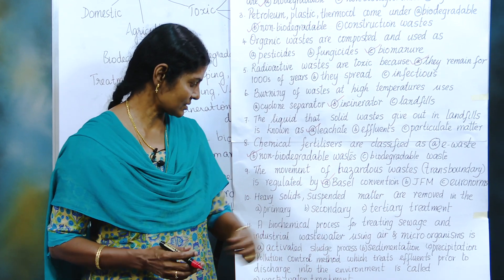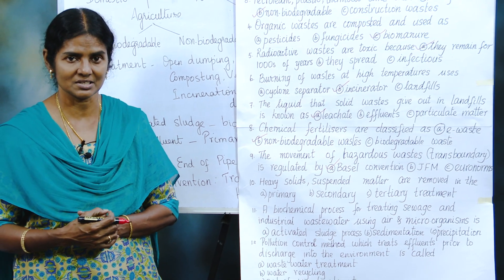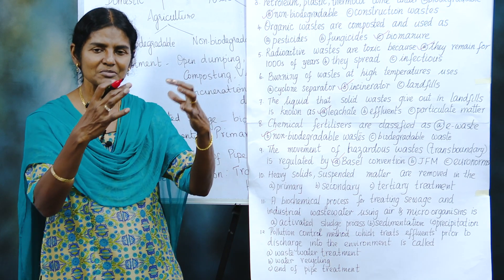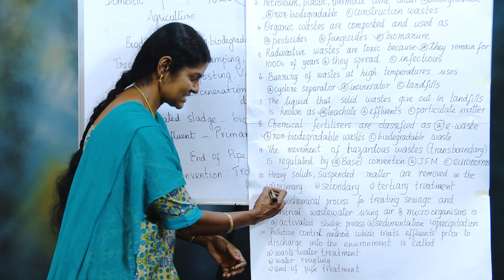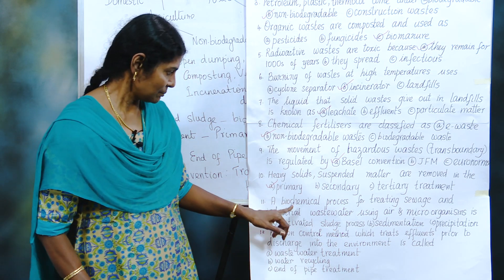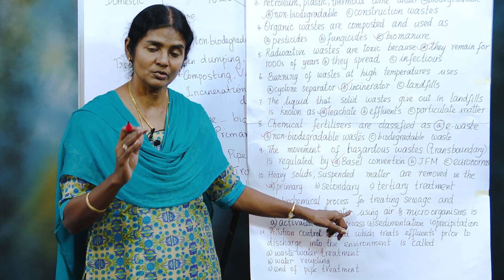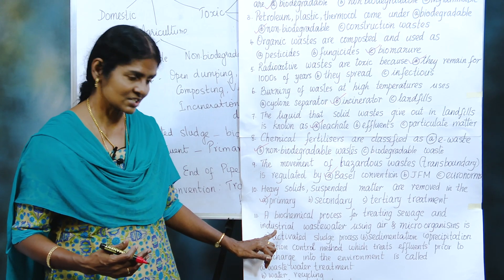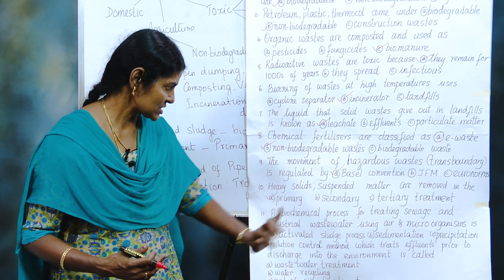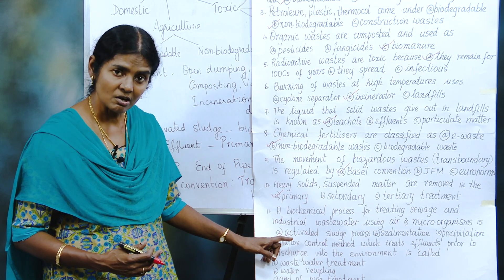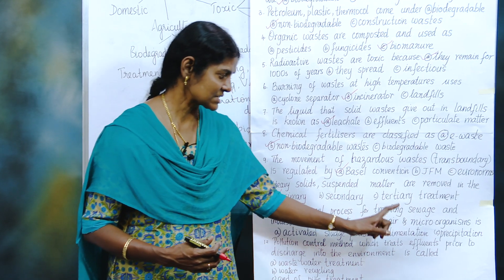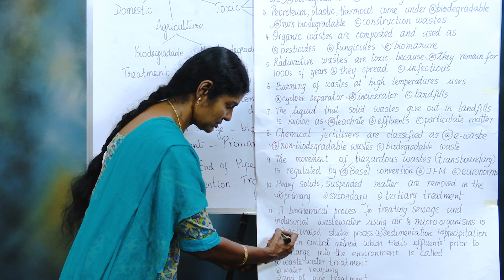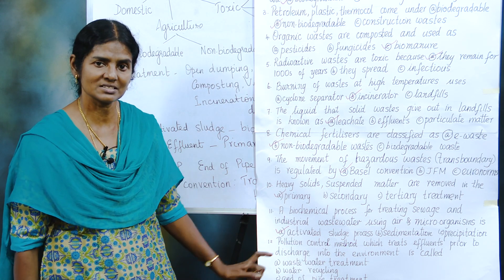Heavy solids and suspended matter are removed in which stage of treatment? When you take wastewater and effluents, the first thing that happens is heavy solids and particles settle down — so that is primary treatment. A biochemical process using microbes, both biological and chemical methods, to treat sewage and industrial wastewater using air and microorganisms — is it activated sludge process, sedimentation, or precipitation? We are using something biological to form a sludge, so the answer is activated sludge process.